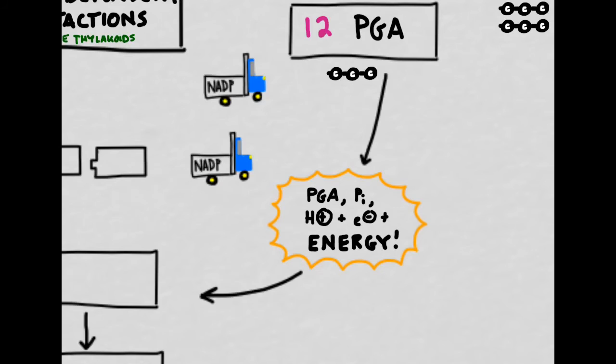In our next step of the process, each molecule of PGA will combine with inorganic phosphate, hydrogen, and electron, and energy.